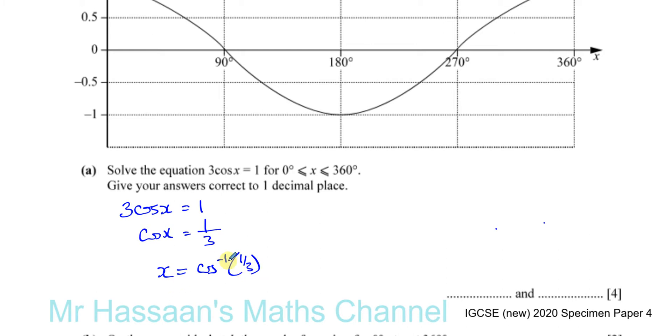That tells us which angle has 1 third as its cosine ratio. When we put this into our calculator, there's many angles that have 1 third as its ratio, but the calculator gives us the principal solution. I'll just get the calculator out.